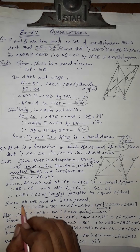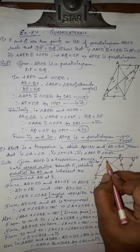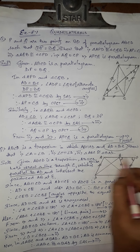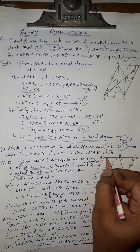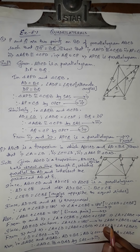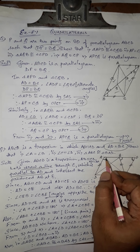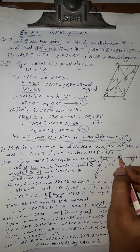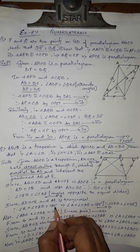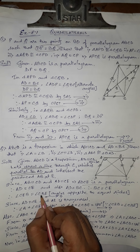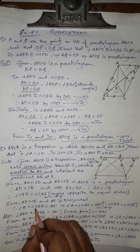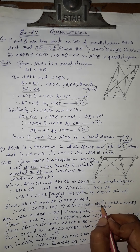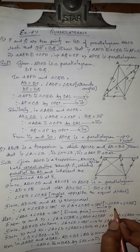Since AD is parallel to CE by construction and AE is a transversal, angle A and angle CEB are co-interior angles, so angle A plus angle CEB equals 180 degrees. Since angle CEB equals angle CBE, we can replace angle CEB with angle CBE. So angle A plus angle CBE equals 180 degrees — this is number one.